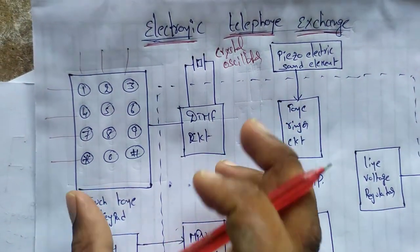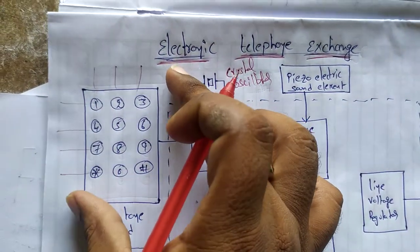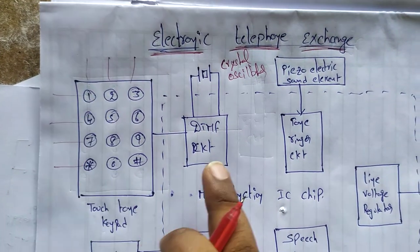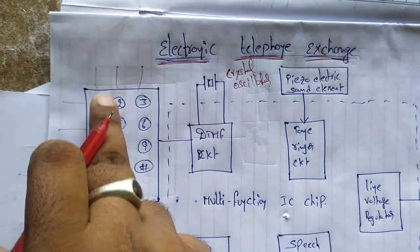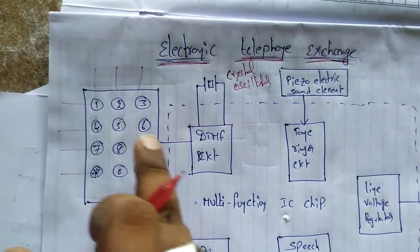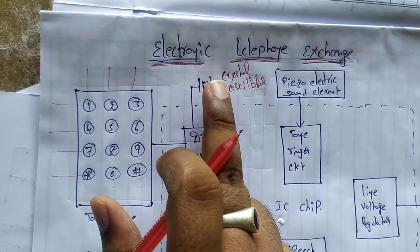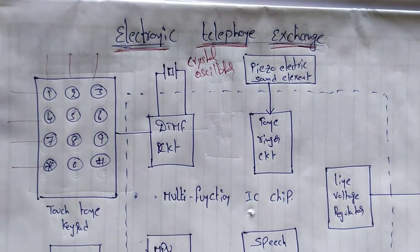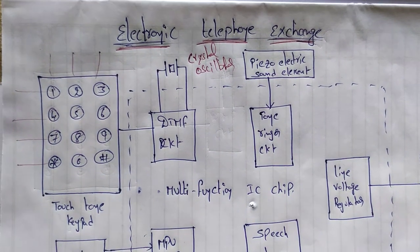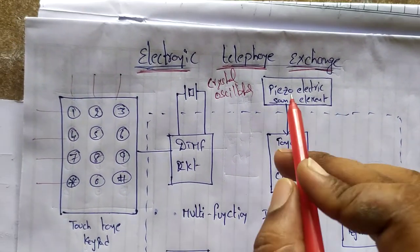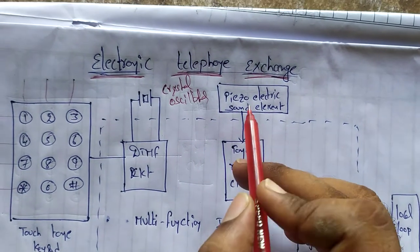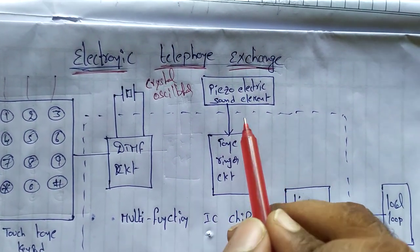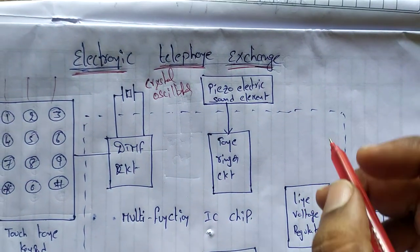When you press the first button, you press the dial tone. When you press the button, DTMF generates a frequency which you check via the crystal oscillator. The element used is a piezoelectric sound element.